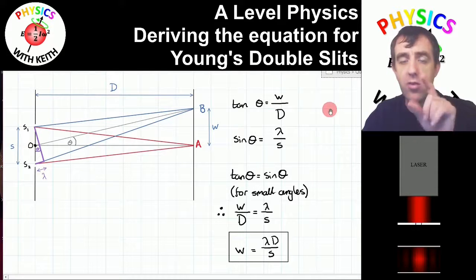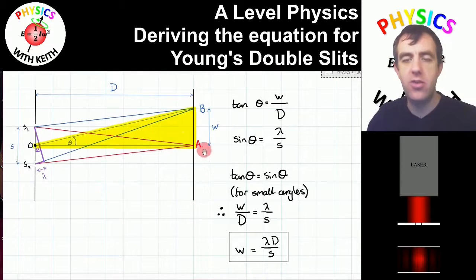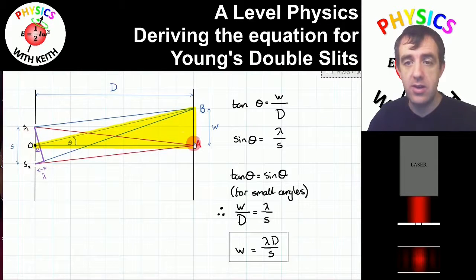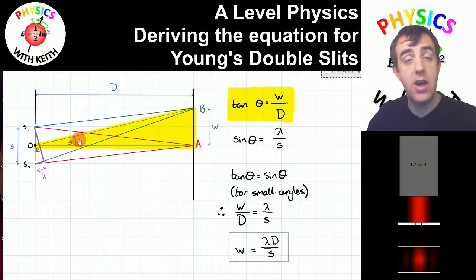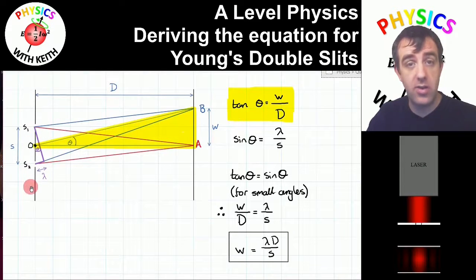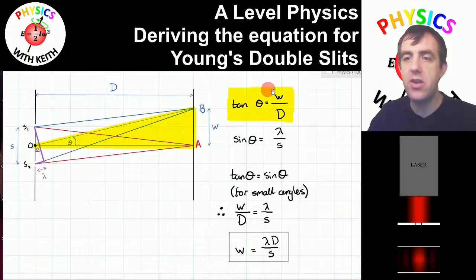Focusing on the two bright fringes, we start with the triangle from a to o to b, where the angle at o is labeled theta. This is a right-angle triangle because point a is equidistant from slit 1 and slit 2. Using trigonometry, tan of theta equals w — the distance between two adjacent bright fringes — divided by d, the distance between the slit screen and the projection screen.